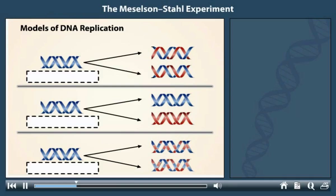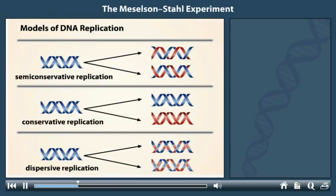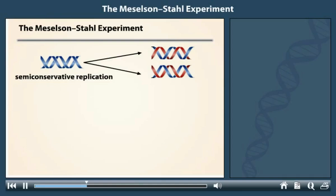Although Watson and Crick proposed the model of semi-conservative replication at the time, no evidence existed to prove that this model was correct. To solve this problem, the scientists Matthew Meselson and Franklin Stahl designed an experiment to test Watson and Crick's model of replication.